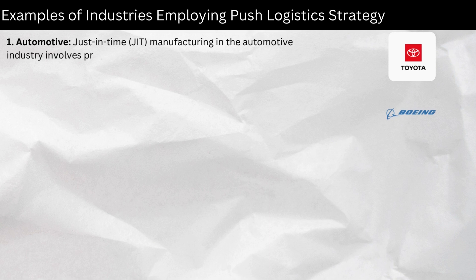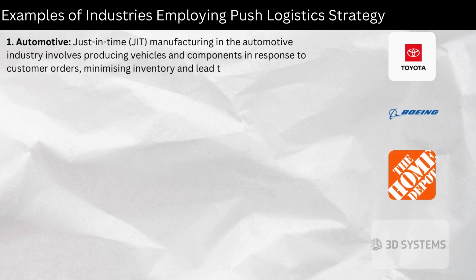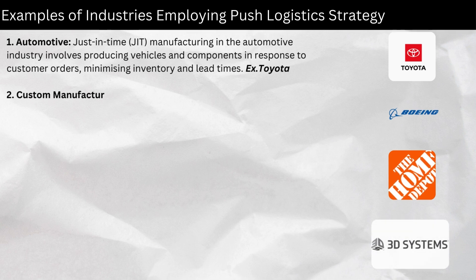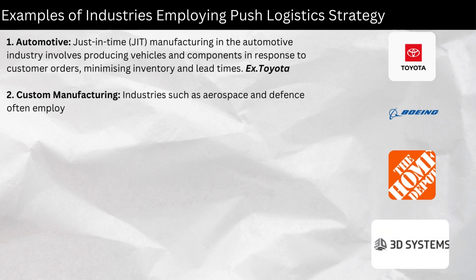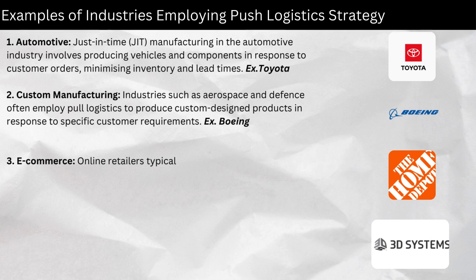One, automotive — just-in-time (JIT) manufacturing in the automotive industry involves producing vehicles and components in response to customer orders, minimizing inventory and lead times. Two, custom manufacturing — industries such as aerospace and defense often employ pull logistics to produce custom-designed products in response to specific customer requirements.